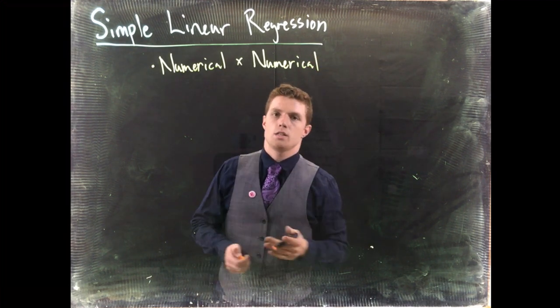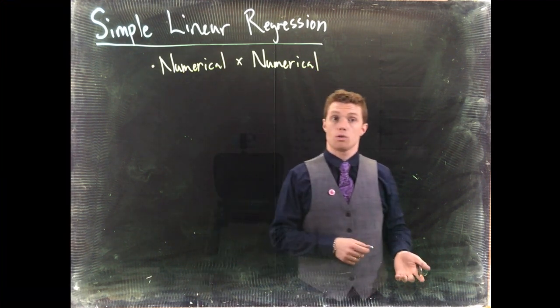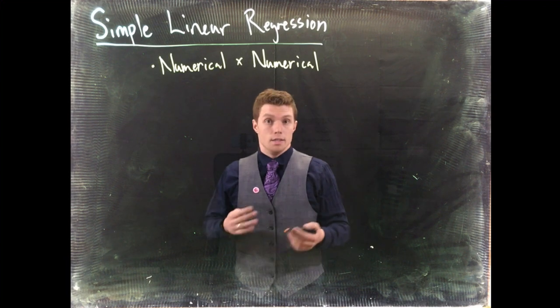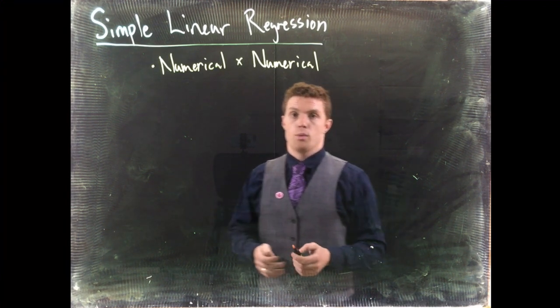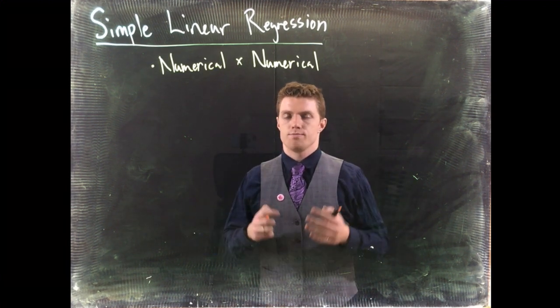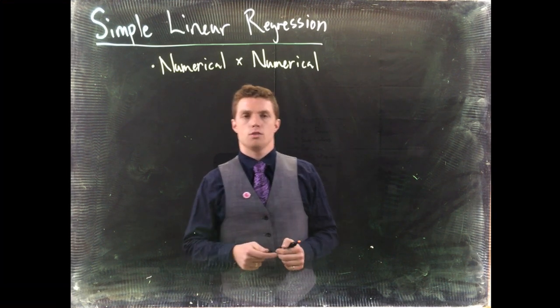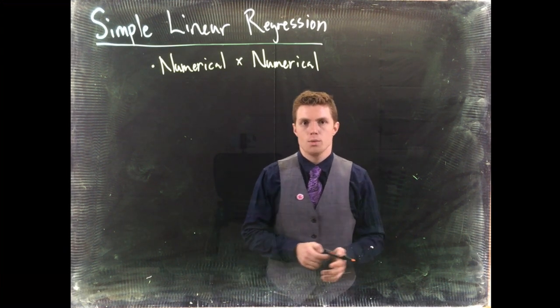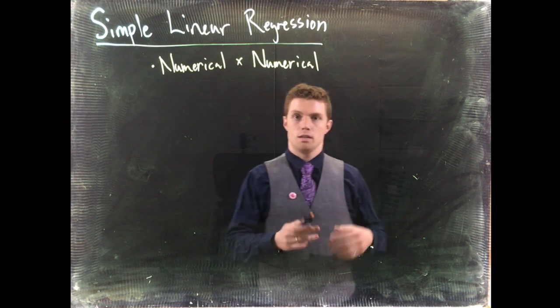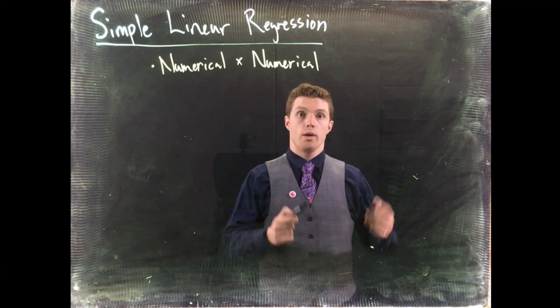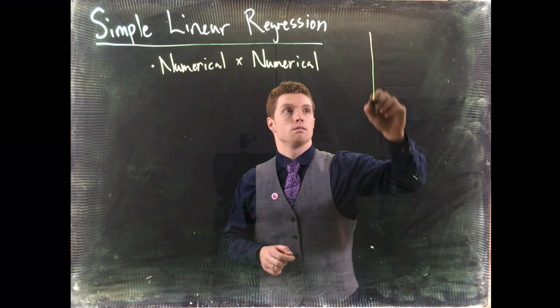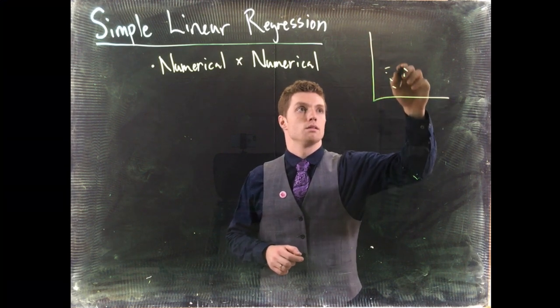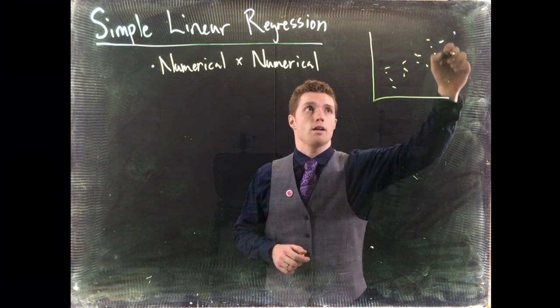So in ANOVA testing, we were dealing with numerical by categorical. We were interested in some numerical value, and we were comparing different groups to one another. This time, we're going to try to predict some value with another numerical value. We are basically doing scatter plots.